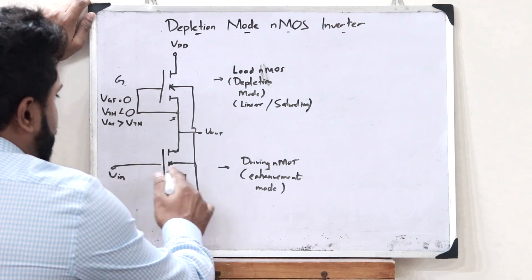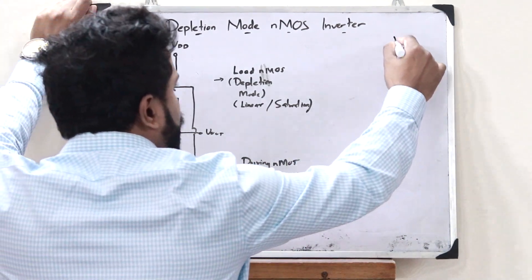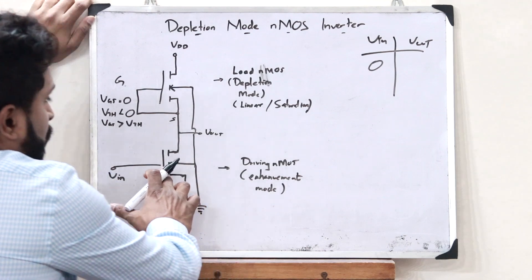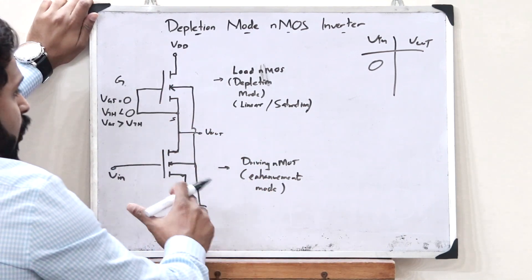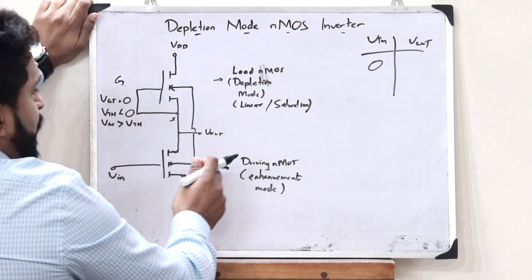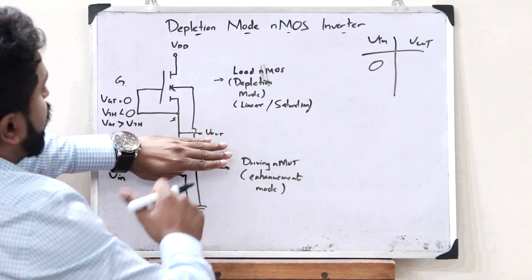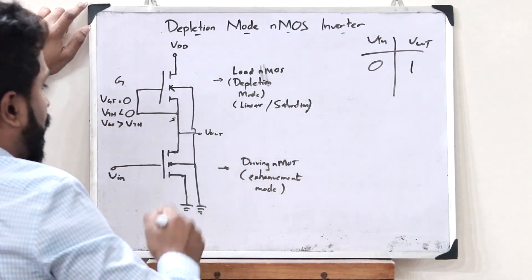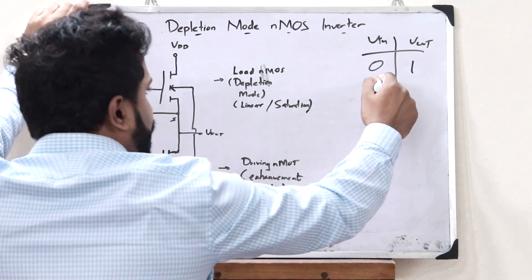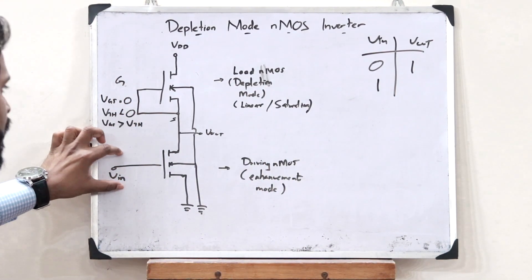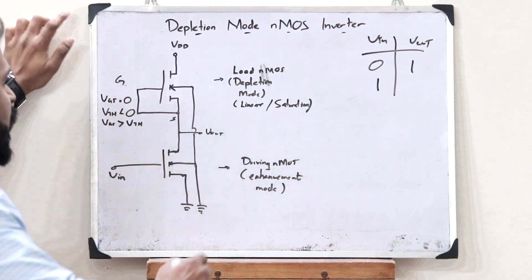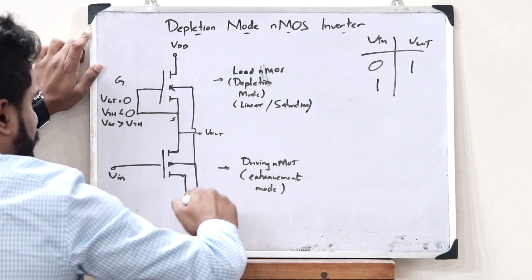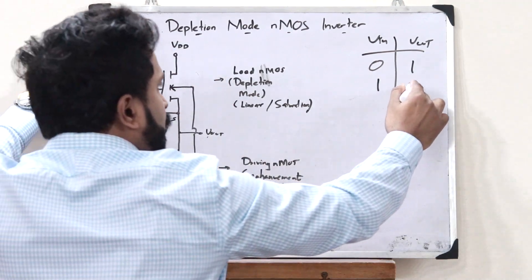Let us imagine that we are giving an input of 0. When we give an input VIN as 0, this particular switch will be in the off condition. If this switch is in the off condition, that means that VOUT will be high because whatever comes from the source goes to the output, so we get an output of 1. But if the input we are giving is 1, if VIN is 1, this particular switch becomes on. If this particular switch becomes on, whatever voltage or current that comes through this particular source, it straightaway goes to the ground. So therefore, VOUT will be 0.